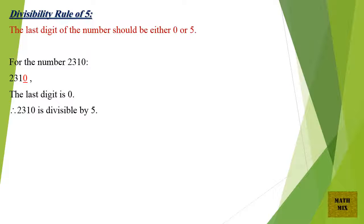Divisibility Rule of Number 5. The last digit of the number should be either 0 or 5. For the number 2310, the last digit is 0. Therefore, 2310 is divisible by 5.